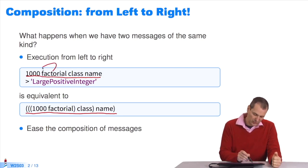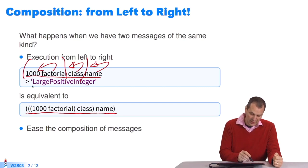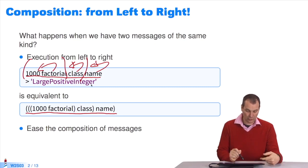I send the message factorial to 1000. Then I send the message class to the result of factorial. Then I send the message name to this new object. It returns large positive integer. Factorial 1000 is a large number. You can also try with factorial 10,000. It's a bit longer.